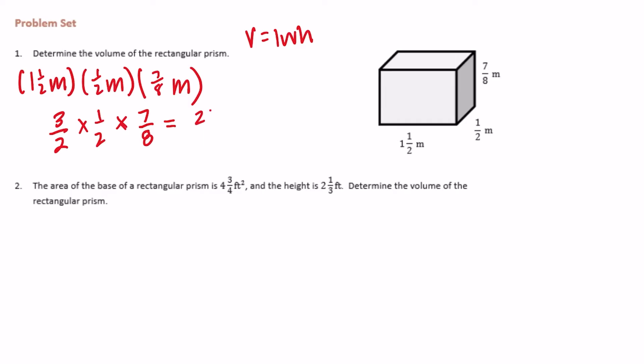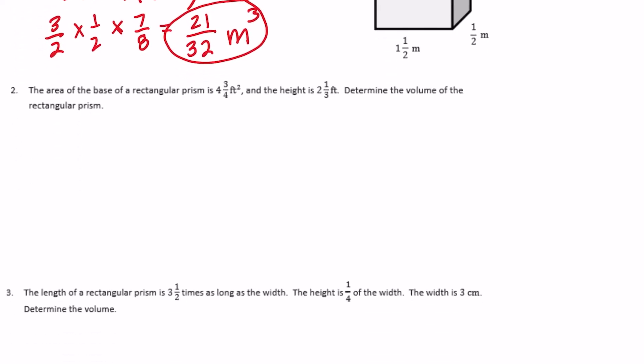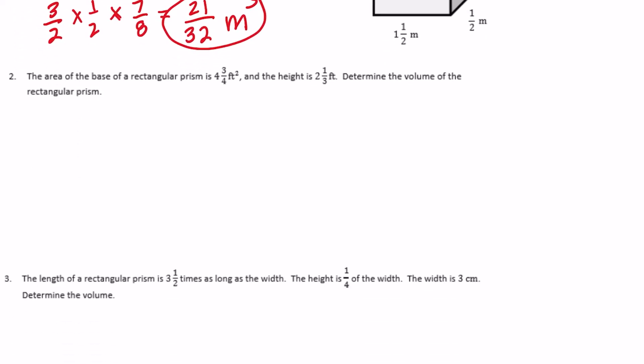We get 21 over 32 — two times two is four, times eight is 32 — so we get 21 thirty-seconds meters cubed. Number 2: the area of the base of a rectangular prism is 4 and three-fourths feet squared and the height is 2 and one-third feet. Determine the volume of the rectangular prism.